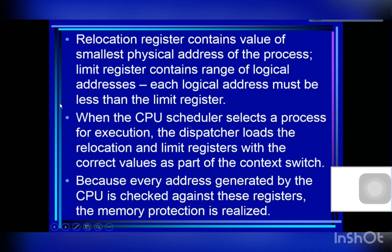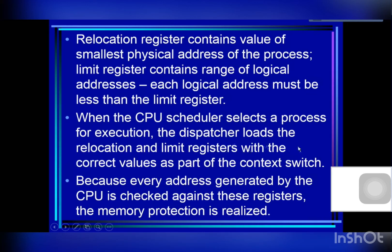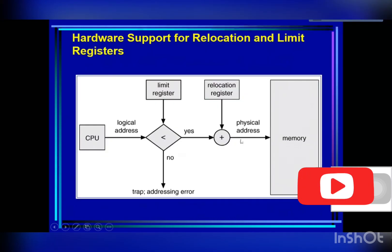When the CPU scheduler selects a process for execution — such as Job 2 — the dispatcher loads the values of the relocation register and the limit register. The values for these registers are stored in the PCB (process control block) of each process. Because every address generated by the CPU is checked against these two registers, memory protection is realized.